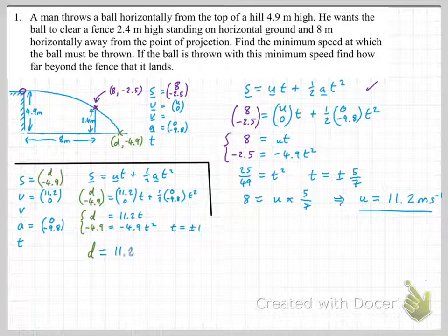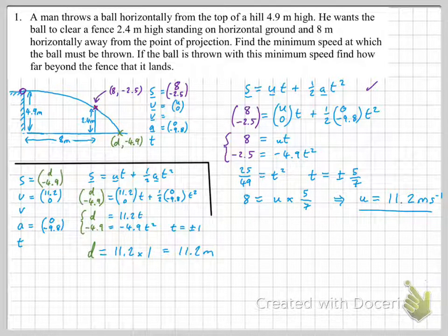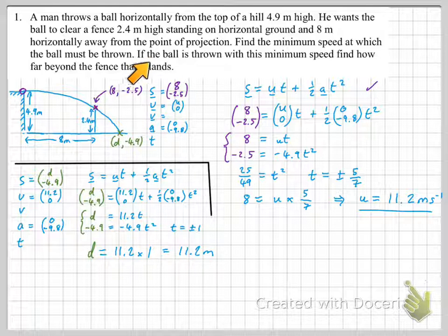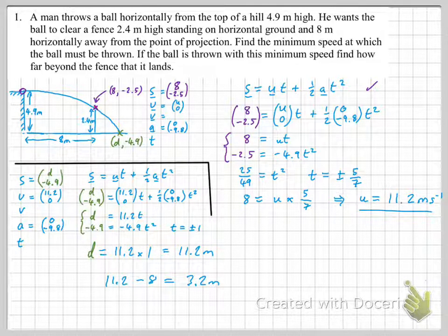So substitute that in and we just get D equals 11.2 times one, which is 11.2 meters. Now you might think that's your final answer, but always, always remember or don't forget to reread the question. Find how far beyond the fence that it lands. And therefore we just need to subtract it. We want this distance here. So take away the 8 and we've got 3.2 meters.